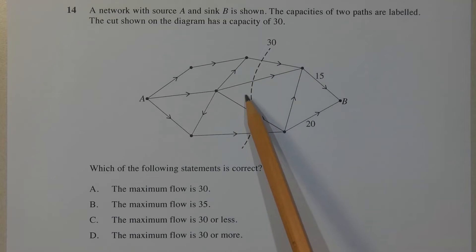If we compare the value of the cut to the value of the flow into sink B, the value of the cut is 30, the value of the flow into sink B is 20 plus 15, which equals 35. The cut represents the maximum flow through the network through that particular cut. Now since the value of this cut is 30, and it's less than 35, we know for a fact that the maximum flow is not 35, therefore option B is incorrect.